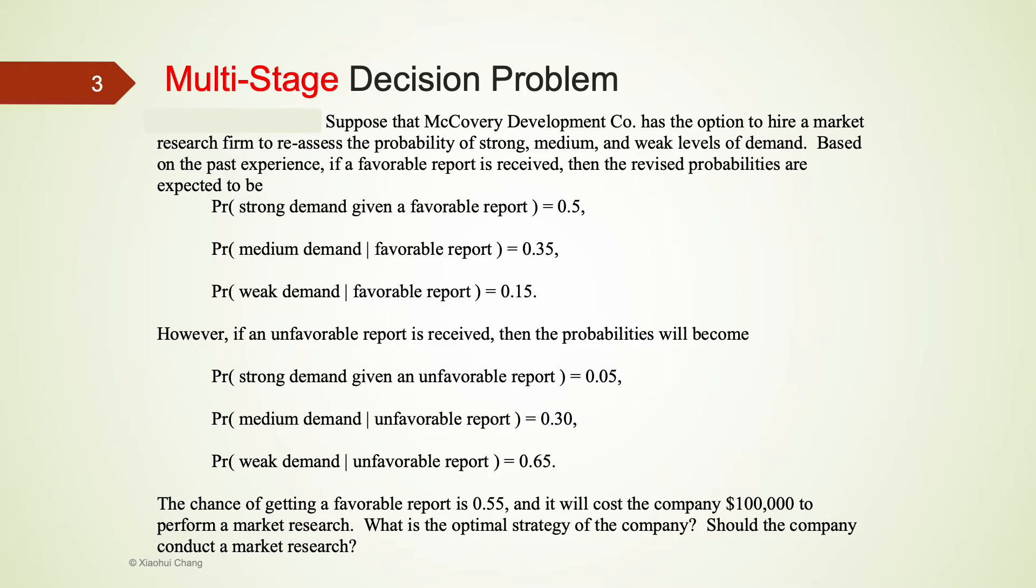If a favorable or optimistic report is received, the probabilities of strong demand, medium demand, and weak demand are 50%, 35%, and 15% respectively.